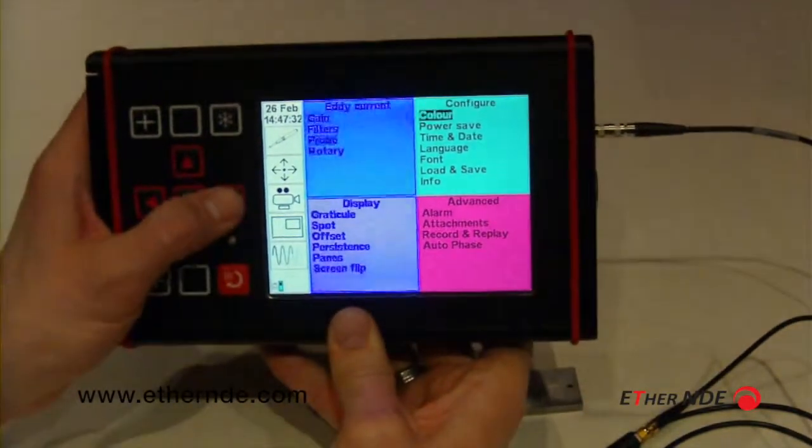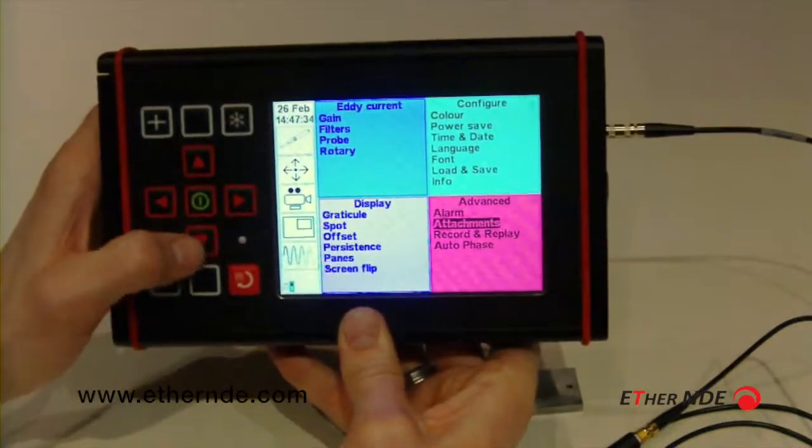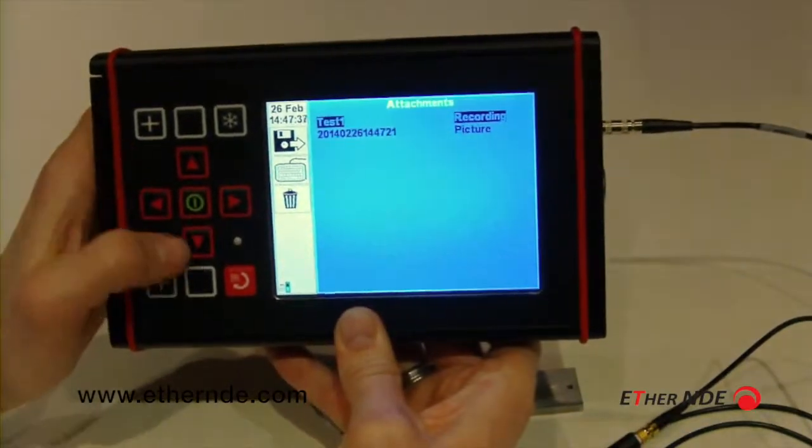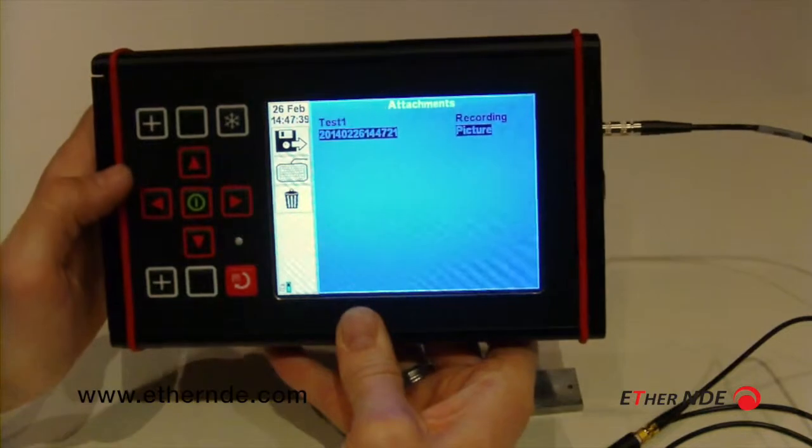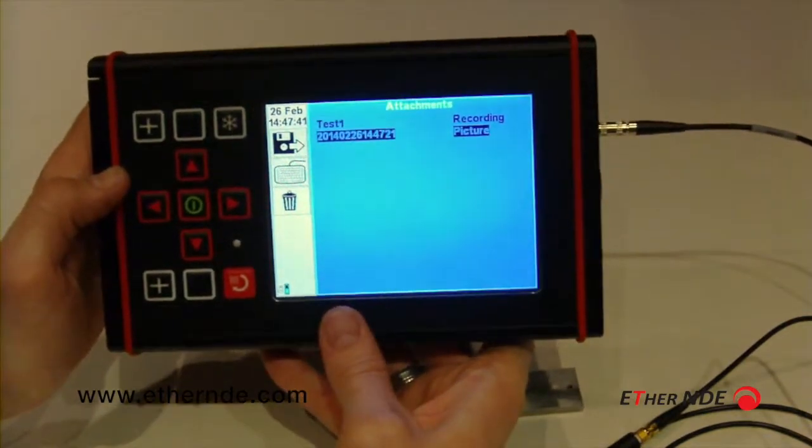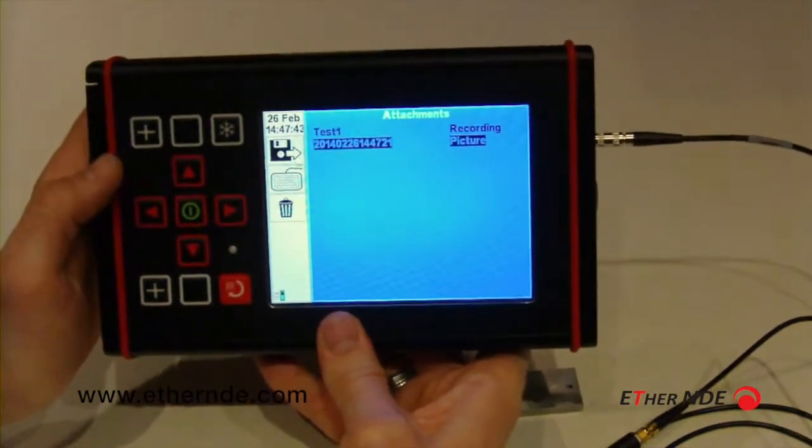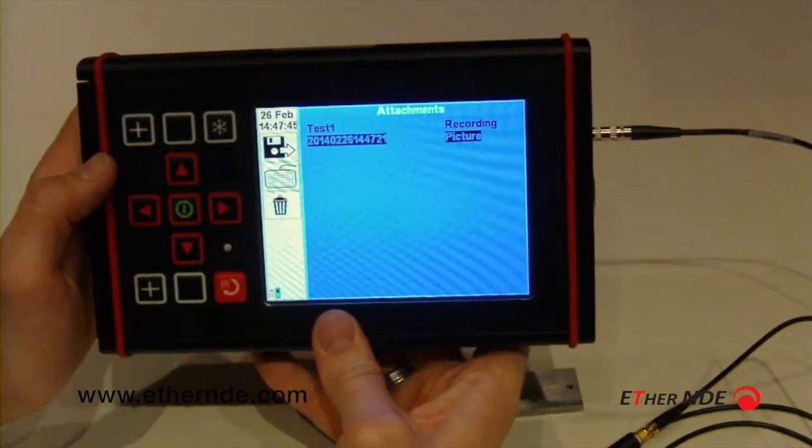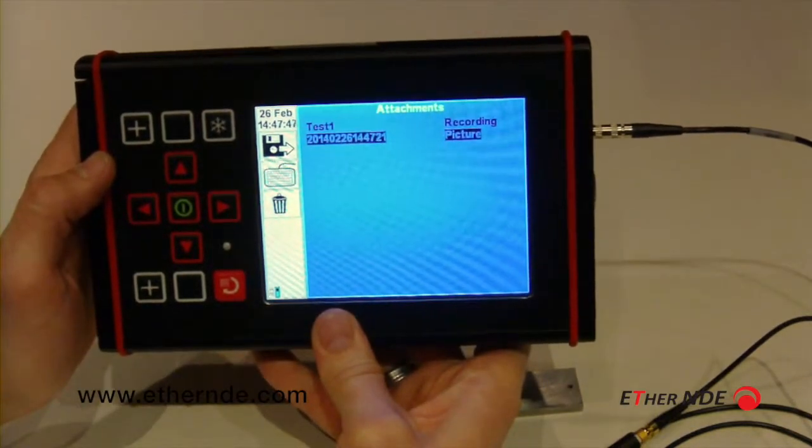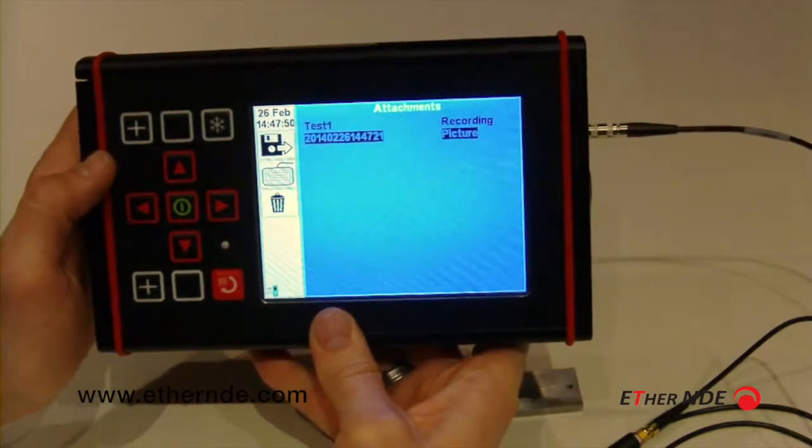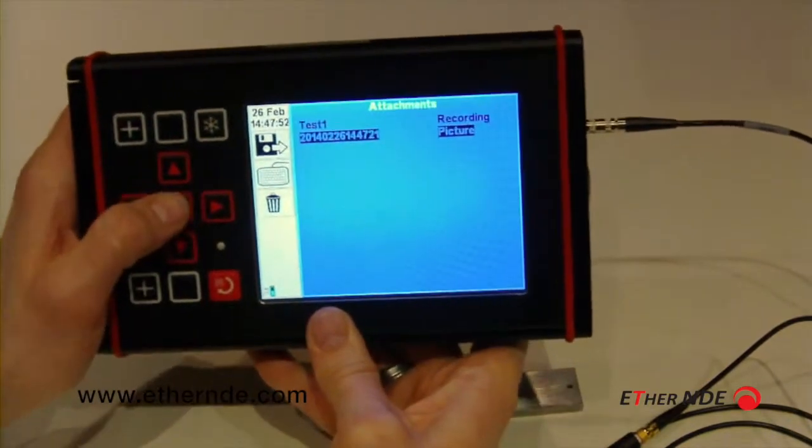I can view this screenshot as it becomes an attachment, so into attachments. There we have the picture. The file name represents the time and date that the picture was taken. We have 2014, the second month, February 26th, at 2:47, 21 seconds.